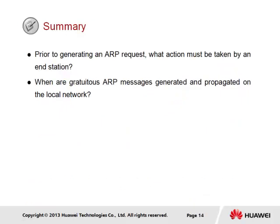In summary for this Address Resolution Protocol section, two questions are posed. The first: prior to generating an ARP request, what action must be taken by an end station? A host must determine whether it is aware of the physical path to which traffic should be forwarded before resorting to generating ARP requests, by consulting the ARP cache for a valid address resolution between the intended IP destination or the IP gateway representing the next hop, and the destination MAC address to be used in frame encapsulation. The second: when are gratuitous ARP messages generated? A gratuitous ARP packet is generated and propagated over the local network when either an IP-configured device is connected to the network, or when an existing device is assigned a new IP address or its existing IP address is changed.